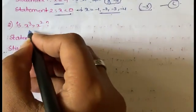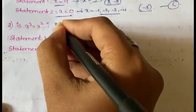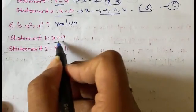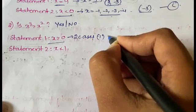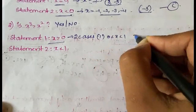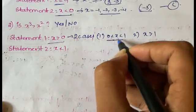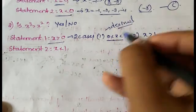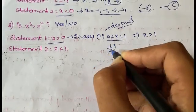Question two: is x³ > x²? You need to determine whether you get yes or no. Statement one says x > 0. Even here, you have two sub-cases: case one where x is between 0 and 1 (decimals), and case two where x > 1, because the behavior differs. Let's check case one — take x = 1/2: (1/2)³ = 1/8 and (1/2)² = 1/4.